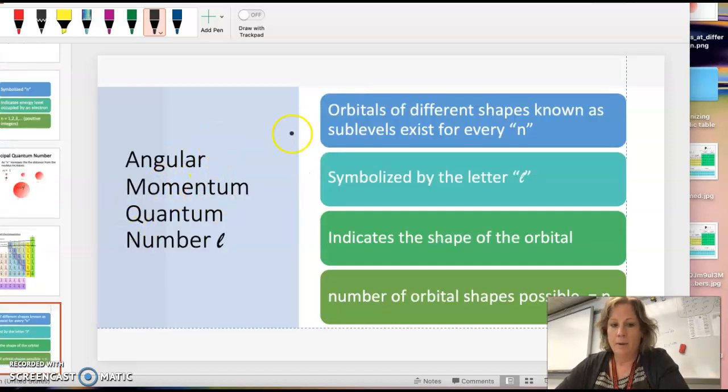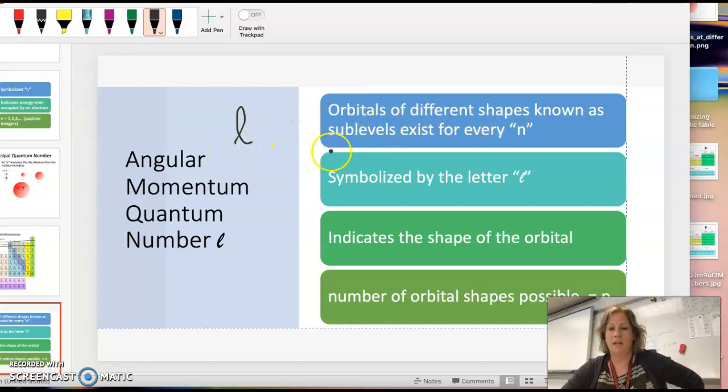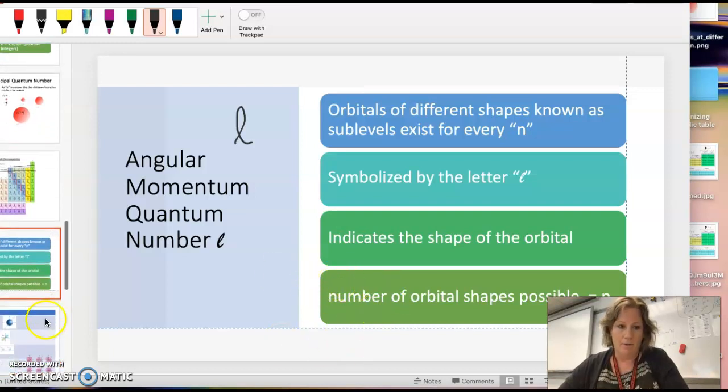The next quantum number we use, it's like a lowercase L, but a lot of times they have kind of a loop into it. It's not a Greek letter, I don't think. This is going to tell you the different shapes that are called sublevels that exist in the main or principal energy level.